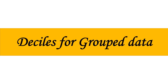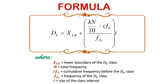Before anything else, let us have a short recap of what deciles are. Deciles are score points that divide the distribution into 10 equal parts. Our formula to get the deciles for group data would be this one. Since this divides the data into 10 equal parts, you can see in the formula that we have the value 10. This is the only difference in the formula that we've used for quartiles and percentiles before.